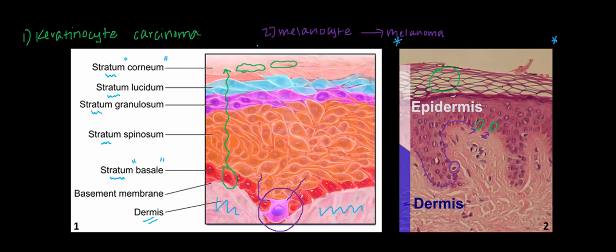Details aside, keratinocyte carcinomas and melanomas make up the most common types of skin cancer. Now it turns out that when it comes to classifying keratinocyte carcinomas, there's one more subdivision that we need to be aware of.